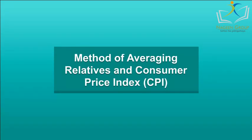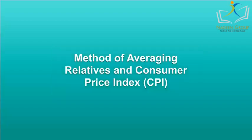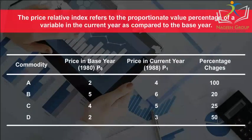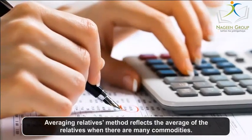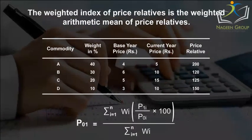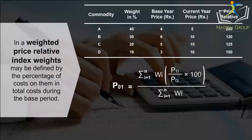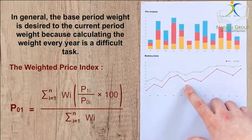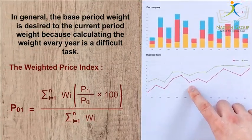Method of Averaging Relatives: With this method, we find out the relative price of individual items and average out their individual values. The price relative index refers to the proportionate value (percentage) of a variable in the current year compared to the base year. The weighted index of price relatives is the weighted arithmetic mean of price relatives. Weights may be defined by the percentage of costs on them in total costs during the base period. Generally, base period weights are preferred because calculating weights every year is a difficult task.